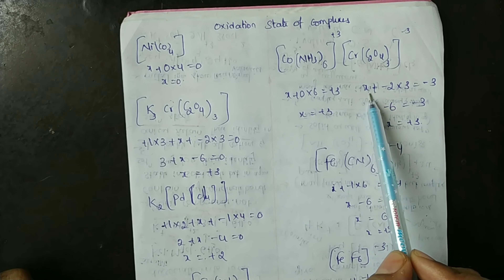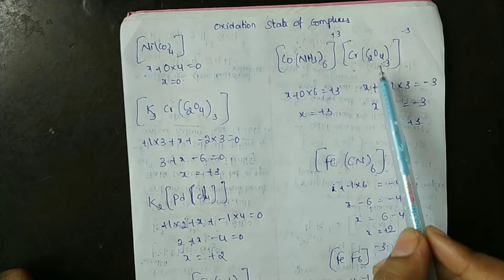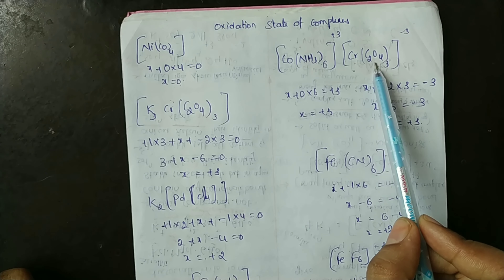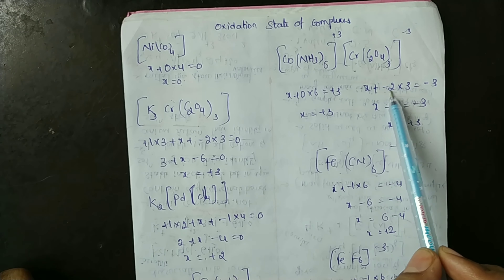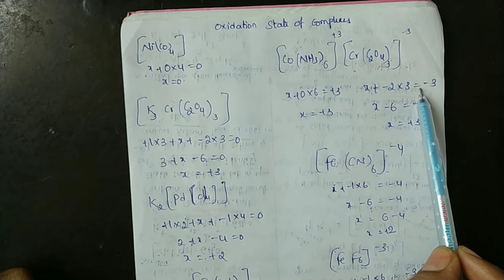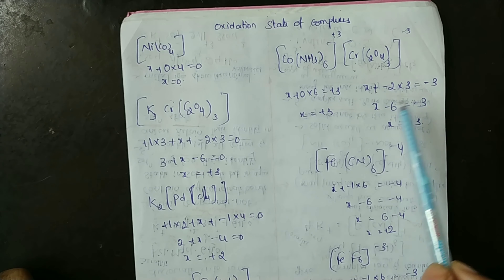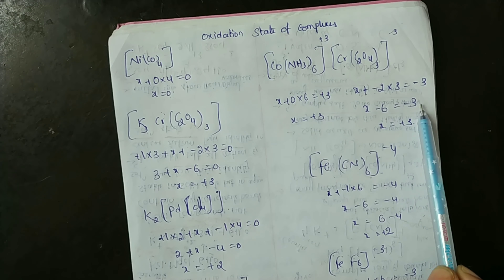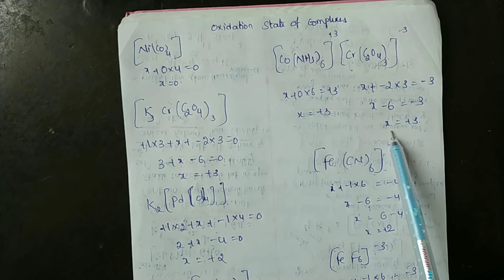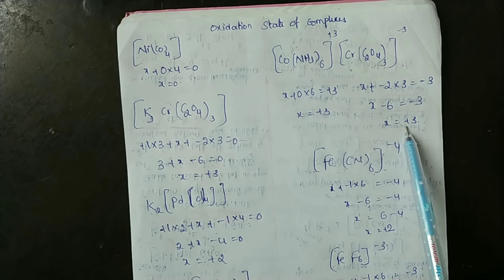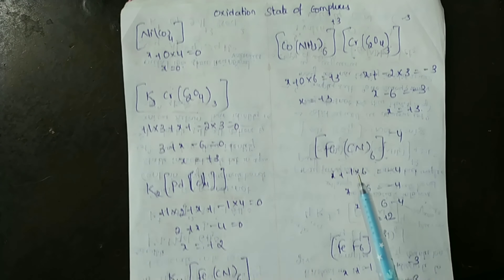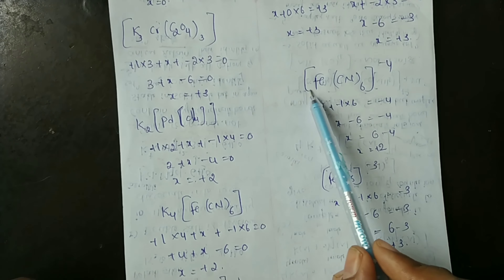Here chromium is the central metal atom, that is x. Oxalato is a bidentate ligand with charge minus 2 into 3, equal to minus 3. So x minus 6 equals minus 3, giving x equal to plus 3. Plus 3 is the oxidation state of chromium in this coordination compound.